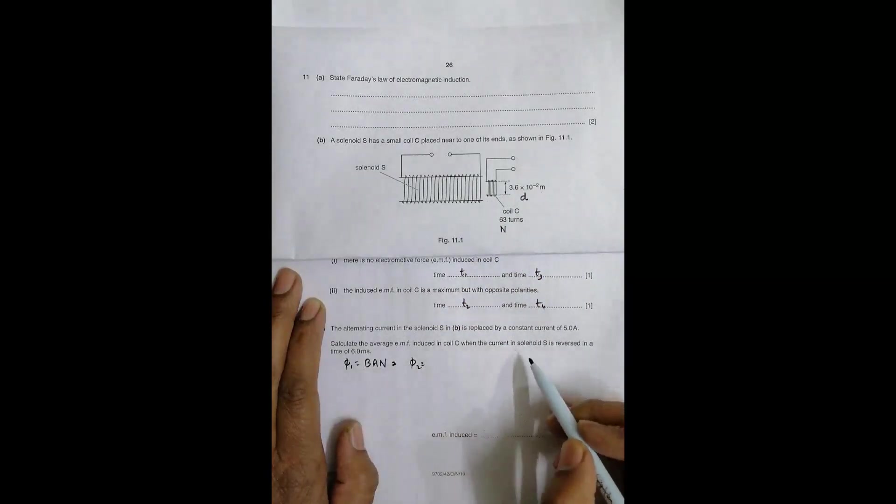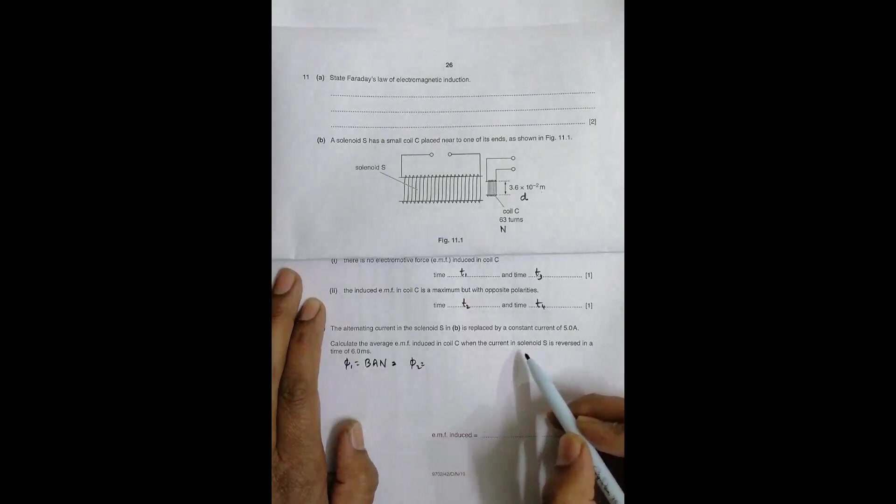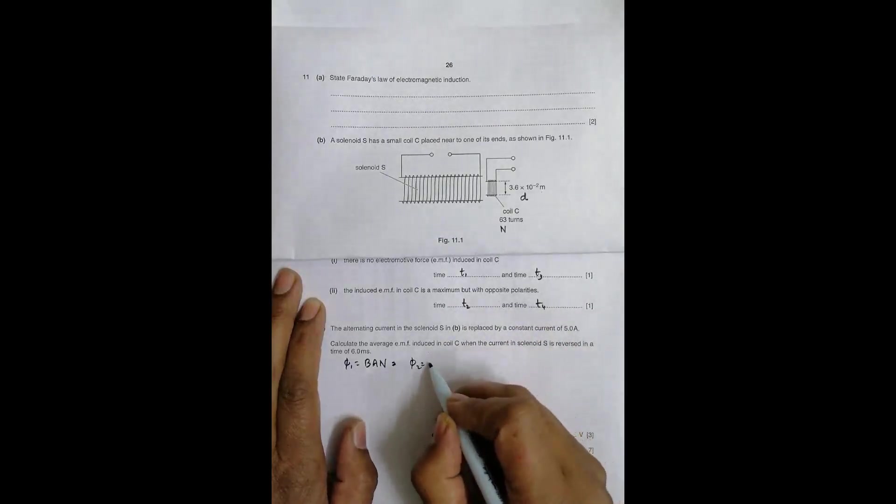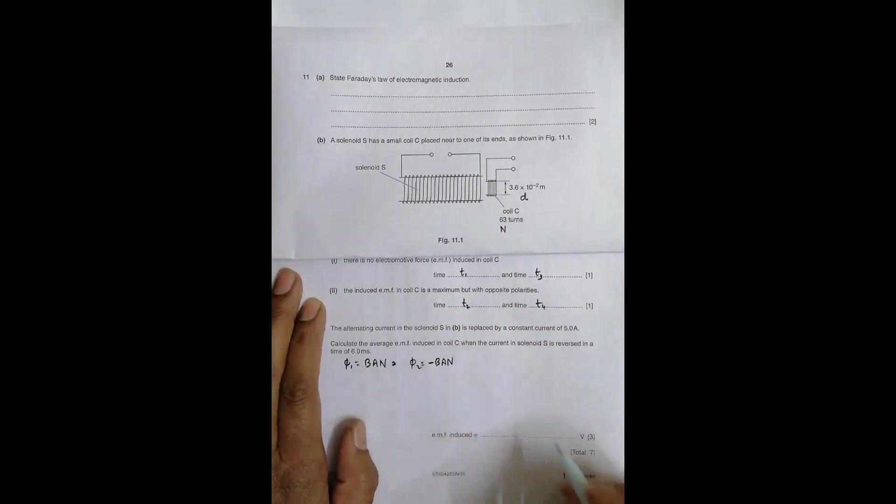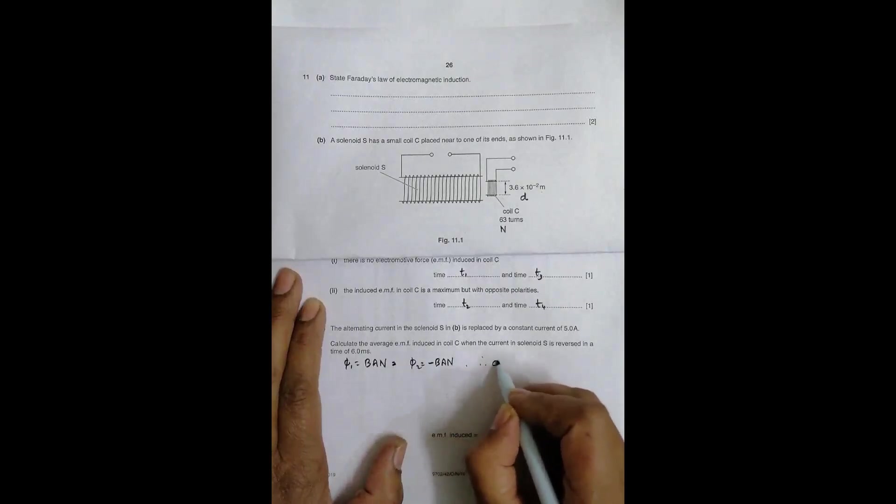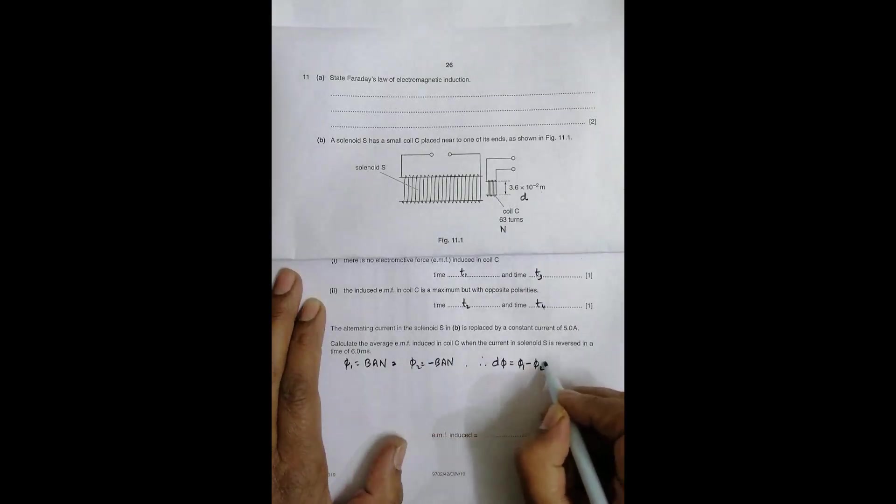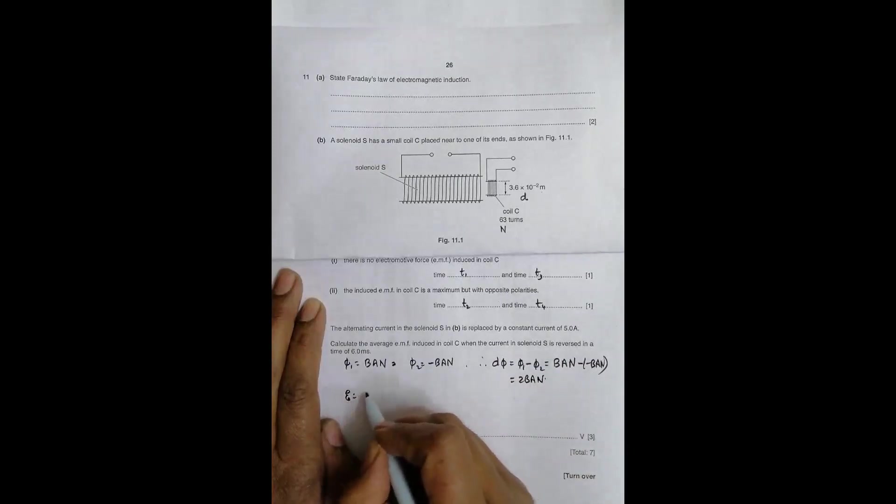φ₂: since current is reversed, the direction of field lines will also be reversed, so it should be -BAN. One is BAN and the other is reversed, so -BAN. Therefore, Δφ = φ₁ - φ₂ = BAN - (-BAN) = 2BAN.